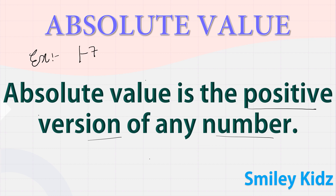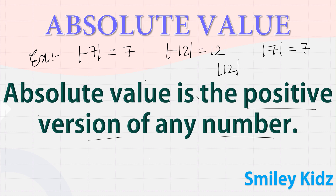The absolute value of minus seven is seven. The absolute value of minus twelve is twelve. The absolute value of seven is seven. Here we can see that the absolute value of any number, either positive or negative, is always positive.